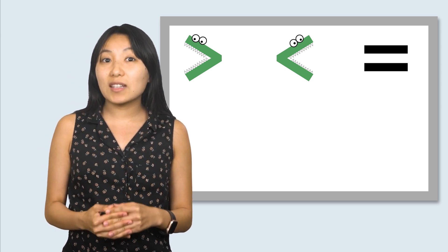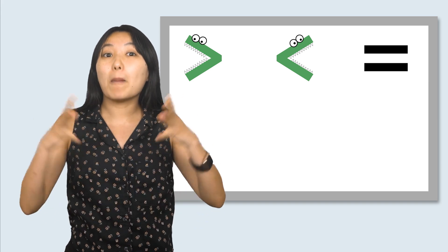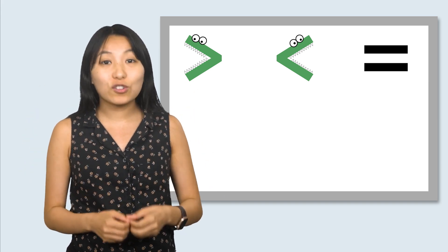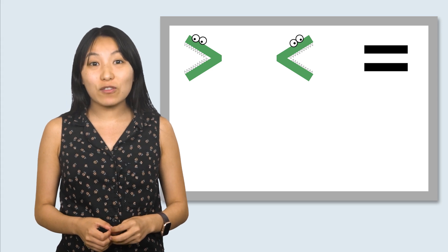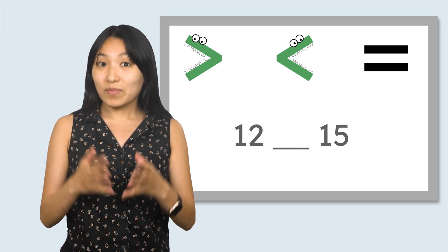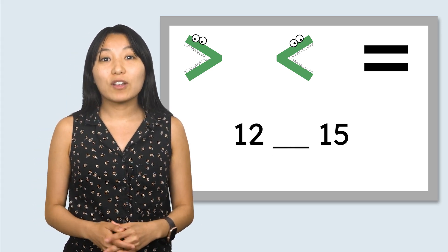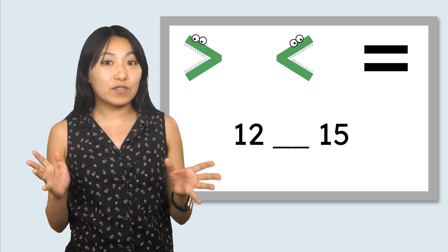They each want their mouth open facing the bigger or greater number. Let's take a look at the first pair of numbers from Mia's math mystery. To begin, we are comparing 12 and 15.